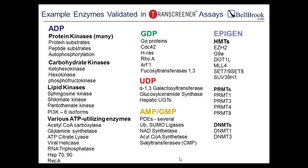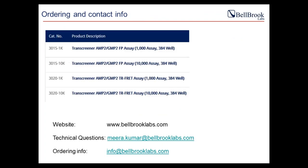That brings us to the end of the talk. We have validated Transcreener assays for a wide list of enzymes — not only those producing AMP, but also targets producing ADP, GDP, or the methyltransferase product SAH. Should you have interest in any of these targets, please contact us. Ordering information and additional details are on our website, and technical questions can be sent to meera.kumar@bellbrooklabs.com. We'll now take questions.